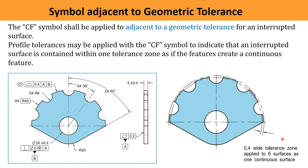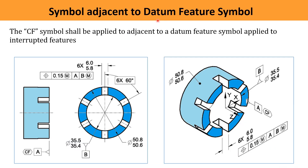Sometimes there are datum features that are not continuous — they are interrupted with N number of planes or surfaces as shown in the figure. To treat all surfaces as one single surface or one datum plane, the CF symbol can be applied adjacent to the datum feature symbol. In this case, all interrupted surfaces are to be treated as one datum feature; the datum symbol A is shown and near to it the CF symbol is applied.